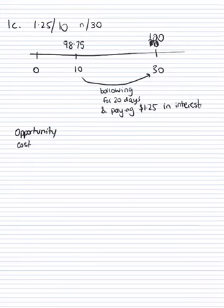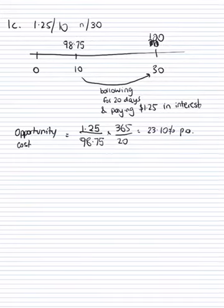If I wanted to find out what it is per annum, I would need to multiply that by the number of 20-day periods in a year, and that gives me 23.10 percent per annum, and that is exactly the same as the formula that is provided in the notes.